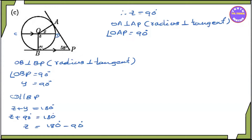The angle OAB remains equal to 90 degrees. This is the second one. The third one: 360 degrees. The third one is the angle OAB plus 58 degrees plus Y plus Z plus X.